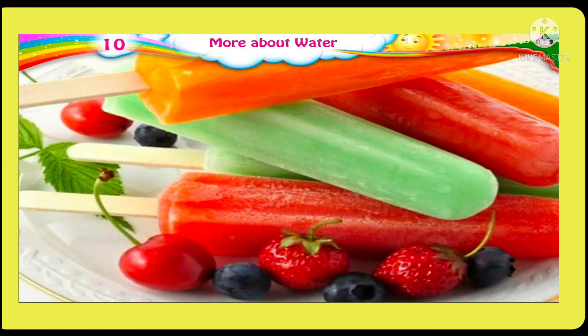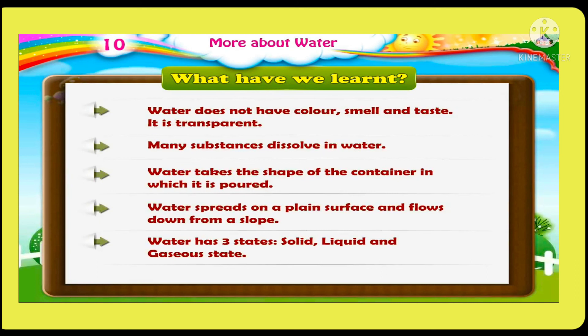Now let us remember what we have learnt in this lesson. First, water does not have colour, smell, or taste — it is transparent. Second, many substances dissolve in water. Third, water takes the shape of the container in which it is poured. Fourth, water spreads on a plain surface and flows down from a slope. Fifth, water has three states: solid, liquid, and gaseous.